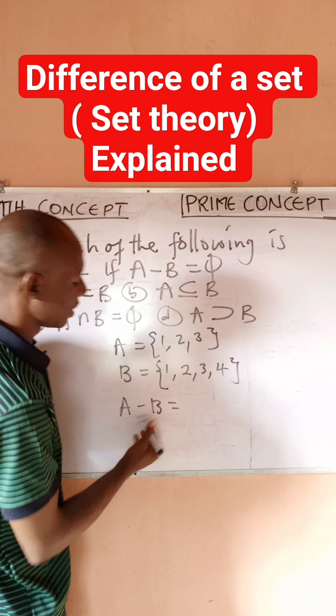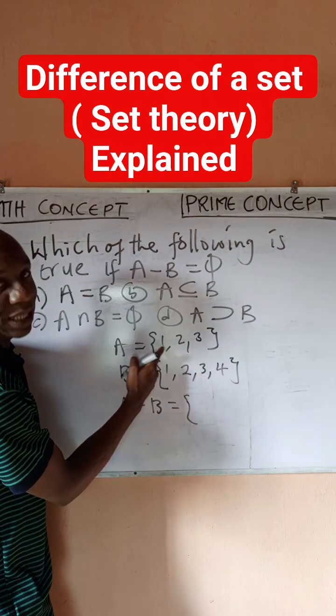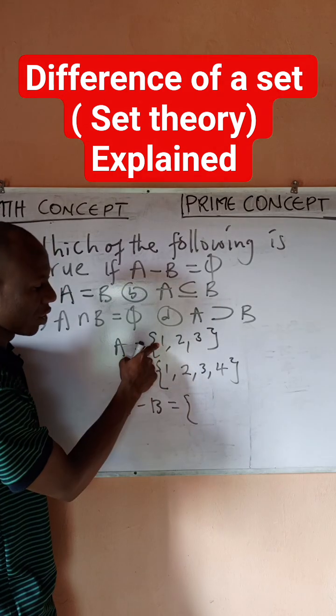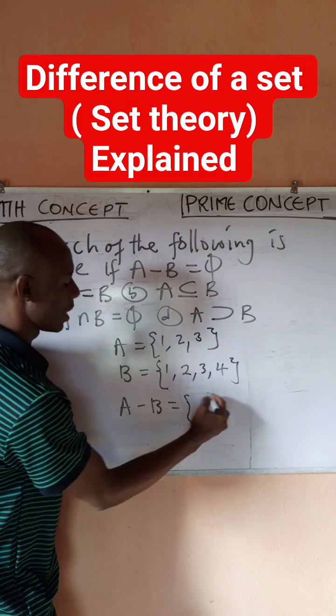What would this simply give me? It would mean removing what you have in B from A, and then what is left in A is your answer. If I remove 1, I remove 2, I remove 3, and you notice...